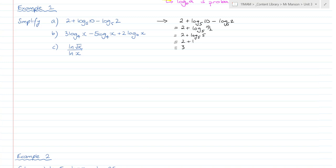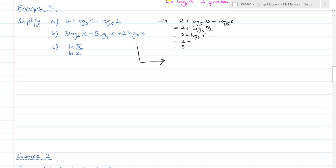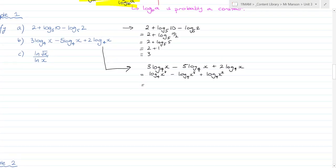Question b is 3 log base 4 of x, minus 5 log base 4 of x, plus 2 log base 4 of x. So, how do I simplify this? So, shall we put the powers in, log base 4 of x^3, minus log base 4 of x^5, plus log base 4 of x^2. Now, how do we simplify that?